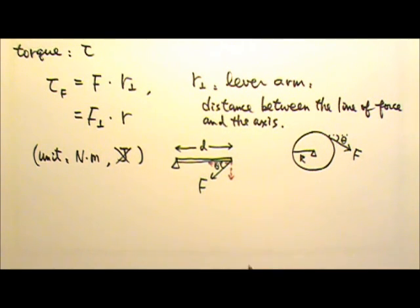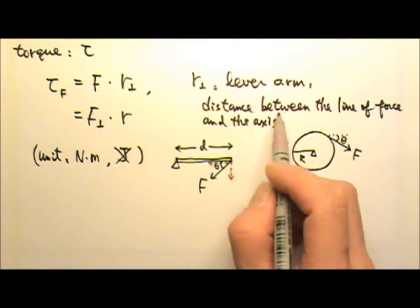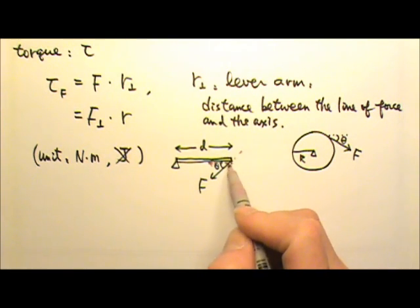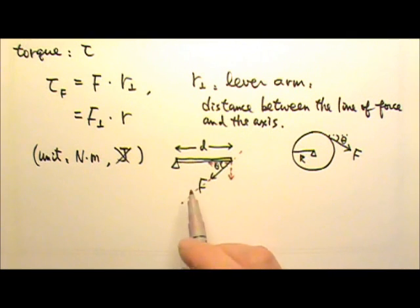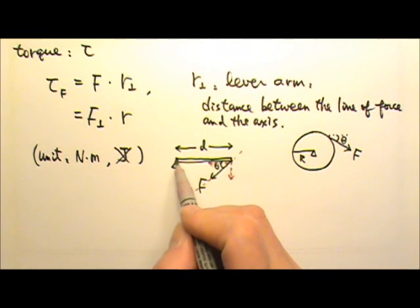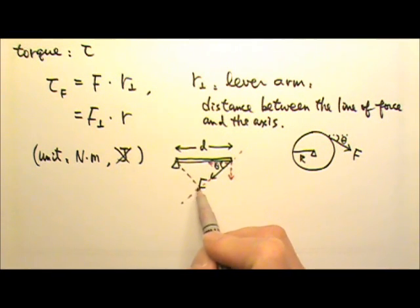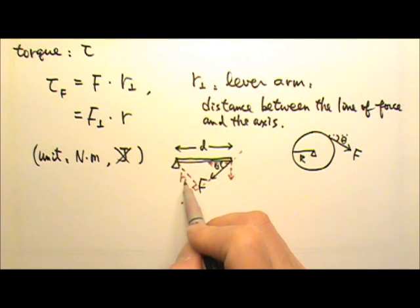To find the torque produced by this force, we can draw a line of force, that's this line over here, and find the distance between this line of force and the axis. And that's the perpendicular distance, so we have to draw this perpendicular line right here. That's the lever arm.